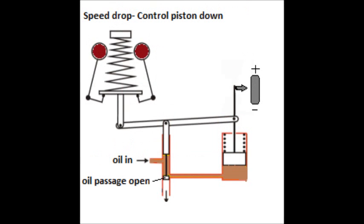When there is a drop in the engine speed, the increase in load moves the flyweights inside and pushes the control piston downwards via linkages.